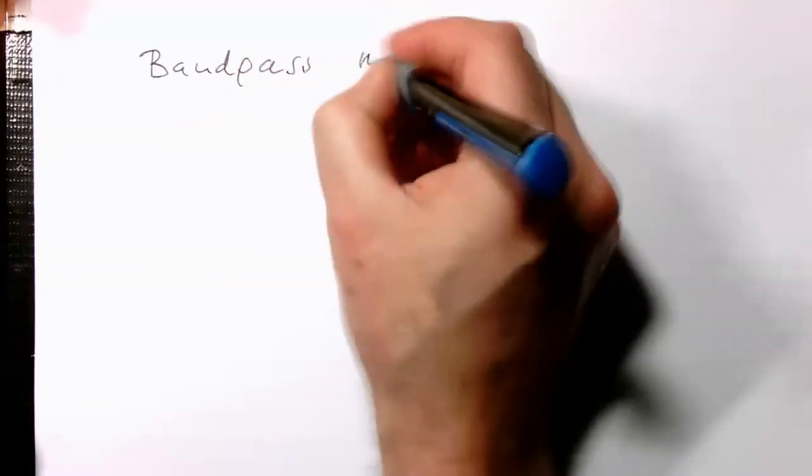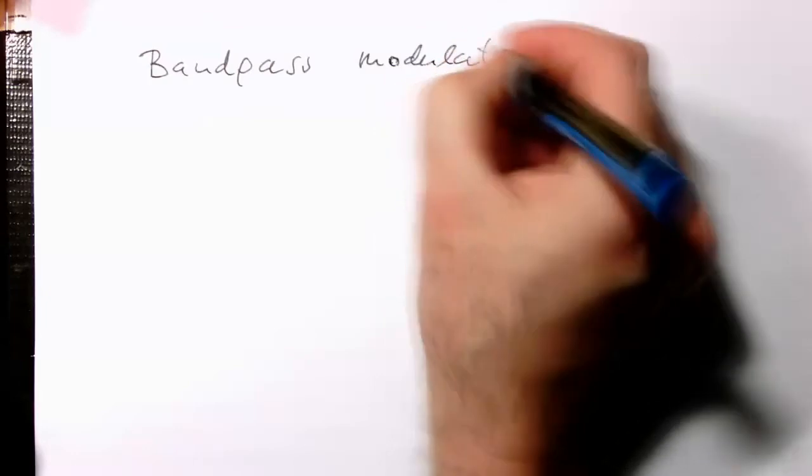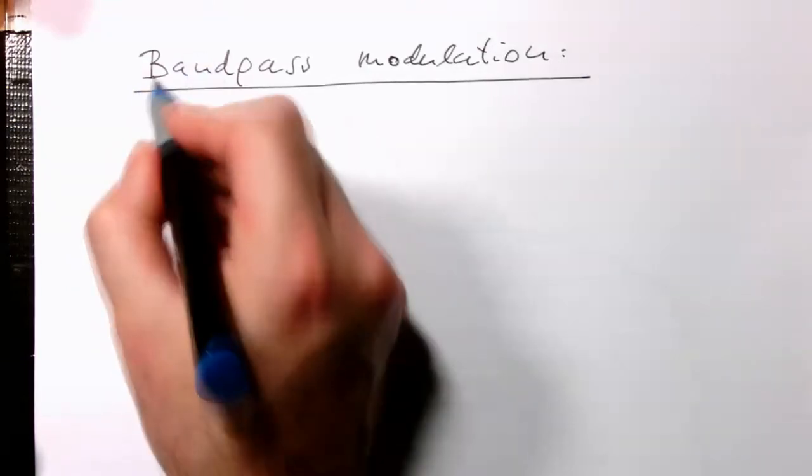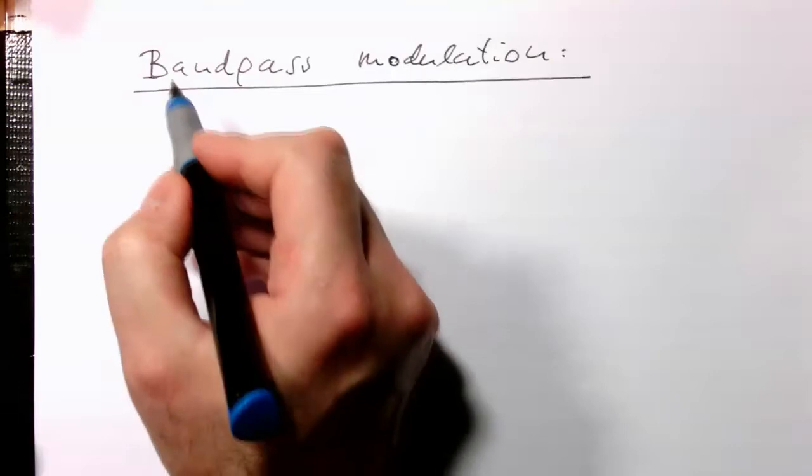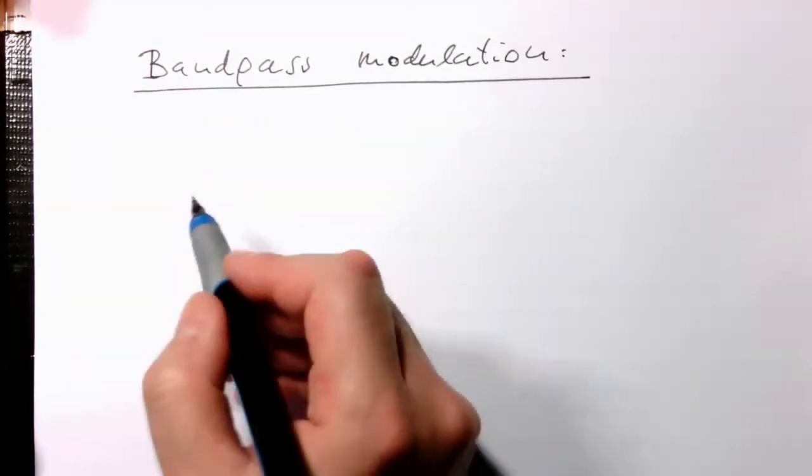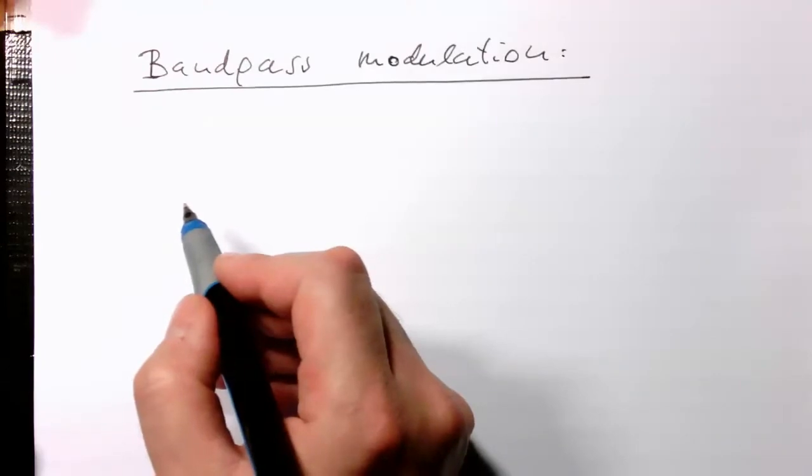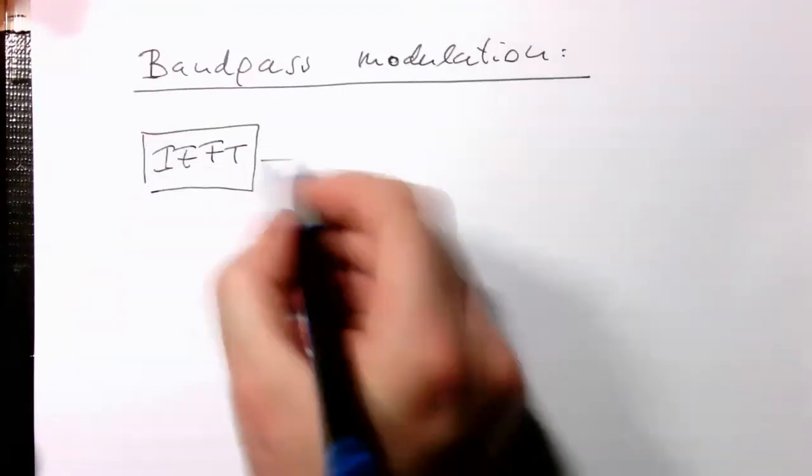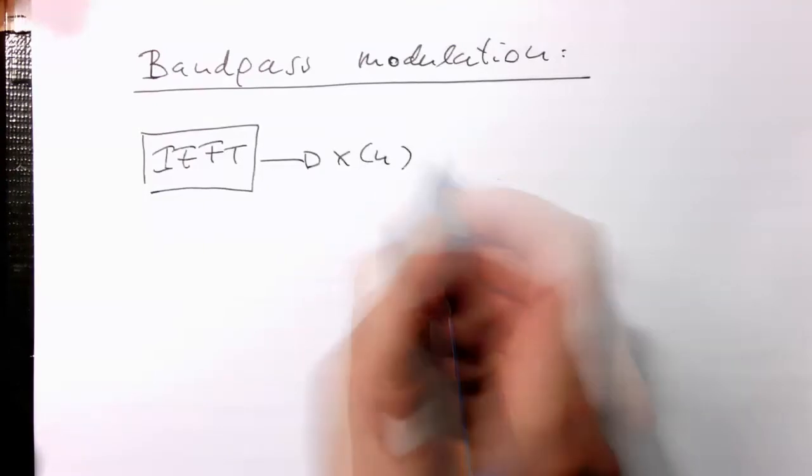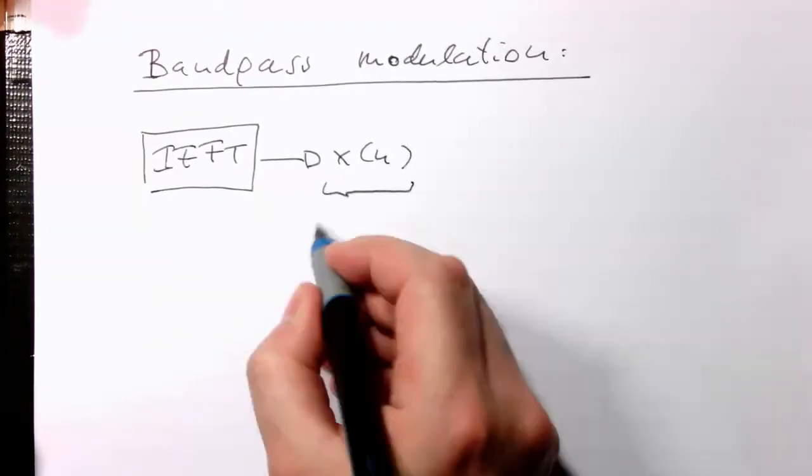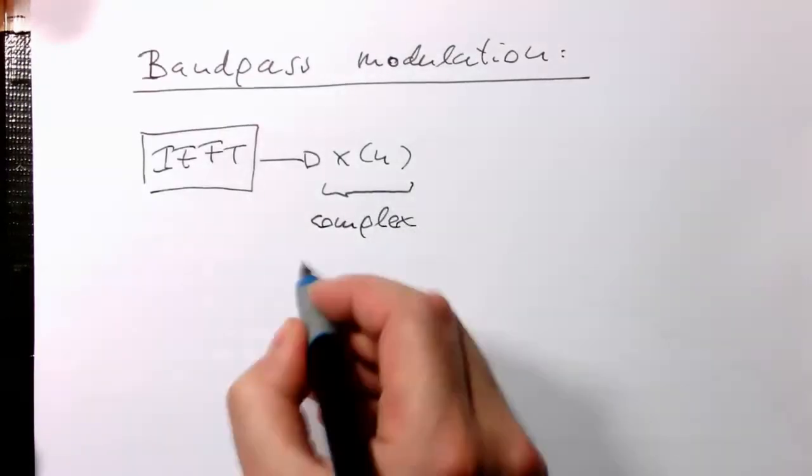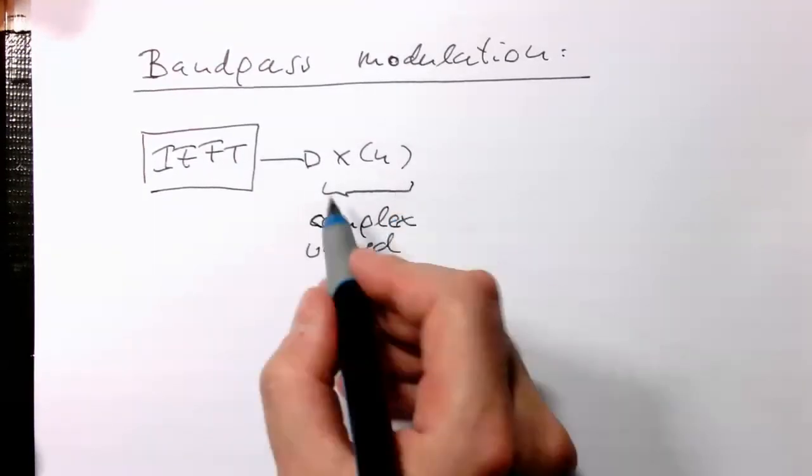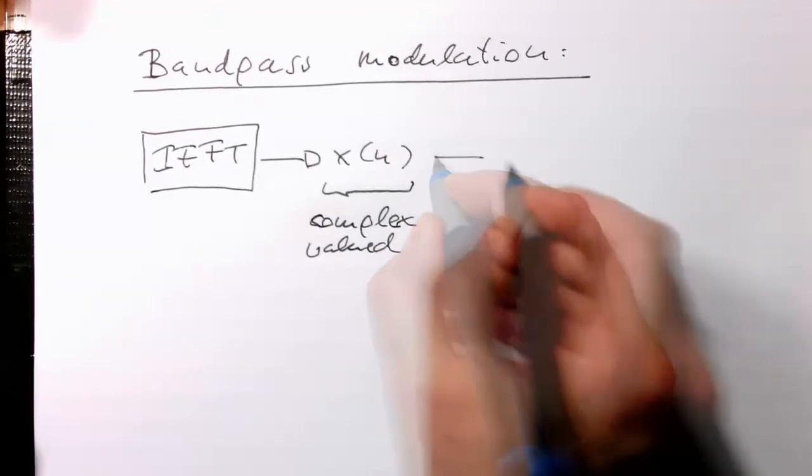Bandpass modulation with a couple of interesting tricks is usually used in high frequency applications. So we need to be more conservative and careful in how we transmit the data. Remember the IFFT generates the signal X of n, but this signal is complex valued. For example, in QAM we have complex numbers, so we need to send this into a quadrature modulator.